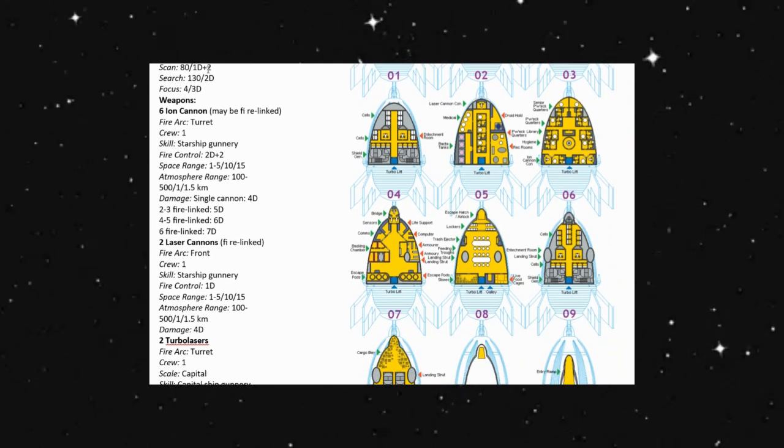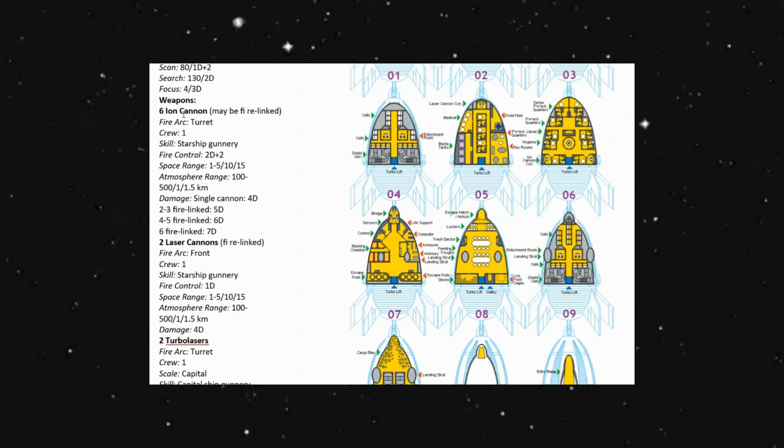In our weapons systems, we do have listed here six ion cannons. Each one is going to have one crew member. Fire control of 2D plus two, so a little bit above average. And with the ion cannons, we can either do it one of several ways. We can either have a single ion cannon, which is just going to do 4D. If we have two or three of them fire linked together, it'll be up to 5D. If we have four to five of them fire linked together, it'll be 6D damage. And if it's all six of them fire linked, it'll be up to 7D damage.